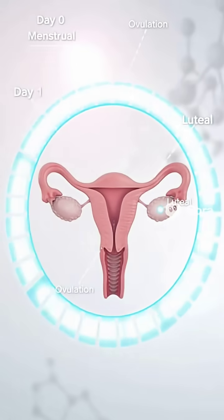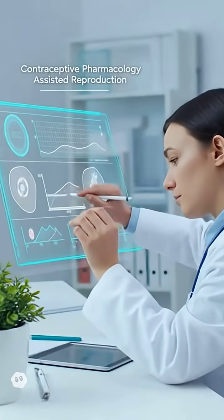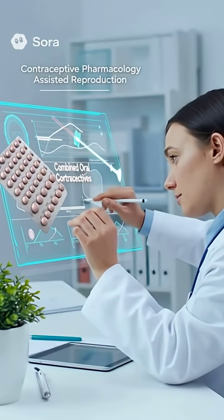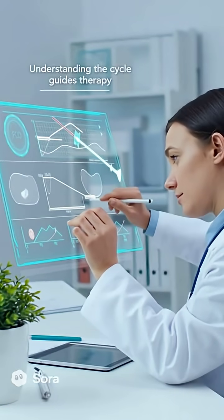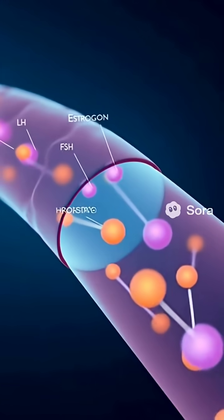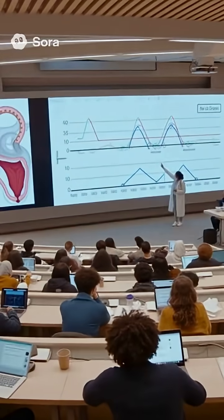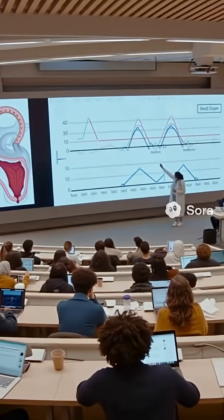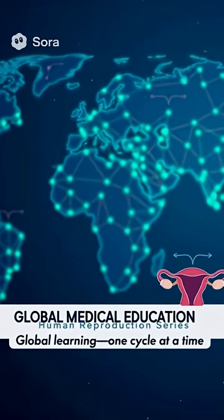Understanding the menstrual cycle is crucial in diagnosing conditions such as amenorrhea, polycystic ovary syndrome, and infertility. It also forms the foundation for contraceptive pharmacology and assisted reproductive technologies. The menstrual cycle is more than just a biological process — it's a remarkable orchestration of hormones, tissues, and time. For medical students worldwide, mastering this topic is key to understanding human reproduction and women's health.